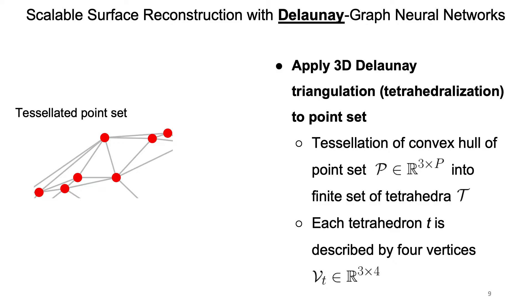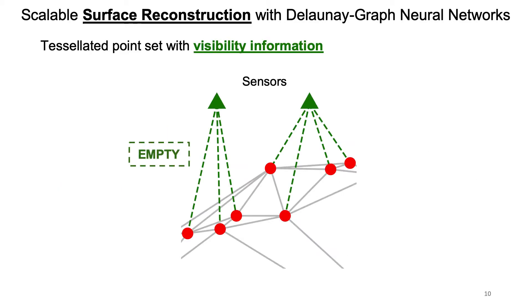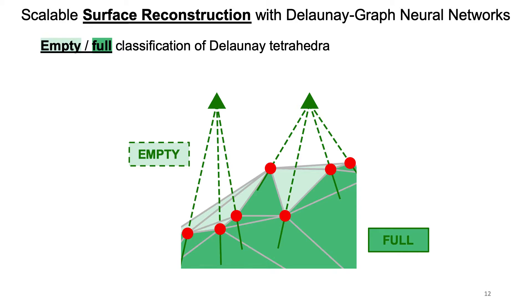To help extract a surface based on this tessellation, we make use of another commonly available piece of information: the position of the sensors that recorded the point set. Here in green we show the sensors such as cameras or LiDAR scanners. We can now draw so-called lines of sight, which are lines between all input points and their corresponding sensor. We can further extend the lines of sight to mark the space just behind an input point, and thanks to the Delaunay triangulation we can use this visibility information to attribute empty-full labels to specific areas of space.